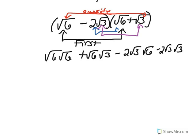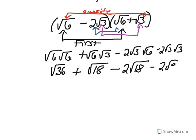The square root of 6 times the square root of 6 is the square root of 36. The square root of 6 times the square root of 3 is the square root of 18. 2 times root 3 times root 6 is 2 times root 18, 2 times root 3 times root 3 is 2 times root 9, square root of 36 is 6. These are like radicals so they can be combined to negative root 18 minus 2 times root 9, but root 9 is really 3 so 2 times 3 is 6. Positive 6 and negative 6 equals 0 and we're left with negative root 18.